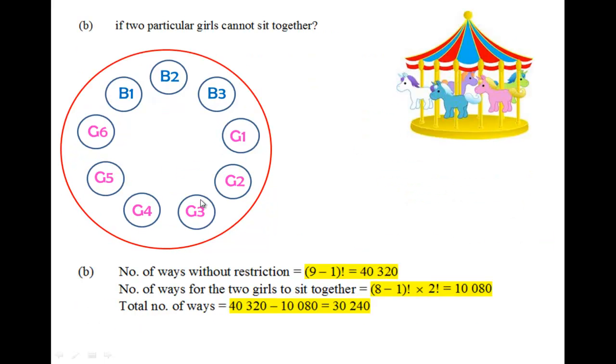Let's look at part B. What is the number of ways if two particular girls cannot sit together? So suppose that we look at two particular girls, G3 and G4. If these two girls cannot sit together, it means to say that if I fix the position of G4, then G3 cannot be in this position, neither can she be in this position.